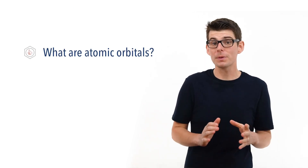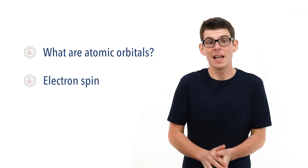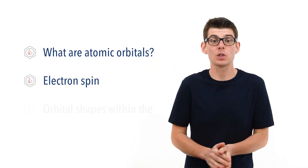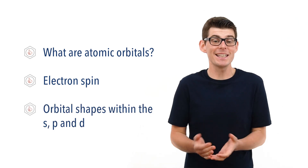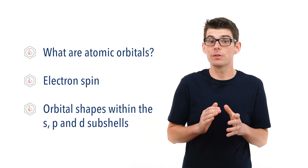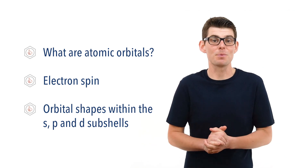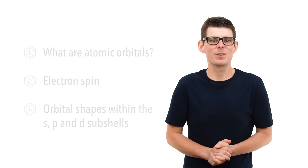Hello, Matt here from chemistrystudent.com. In this video we're going to look at atomic orbitals and subshells. We're going to talk about what atomic orbitals are, the property of electron spin and why this is important with orbitals, and have a look at the shapes of atomic orbitals within the S, P and D subshells. The general structure of an atom, electron configurations, and first ionization energies have been covered in separate videos — check the links in the description below.